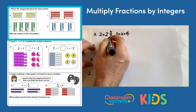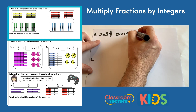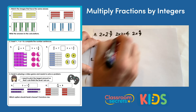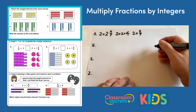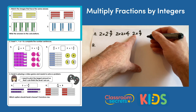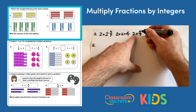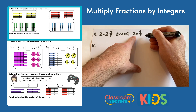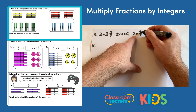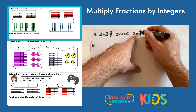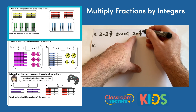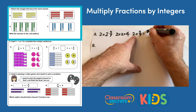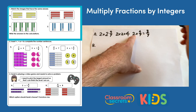Then we have two lots of four sevenths, so two times four sevenths. To do this multiplication we will multiply the integer by the numerator. The denominator wouldn't change because we're still dealing with sevenths. So two multiplied by the numerator four gives eight sevenths.